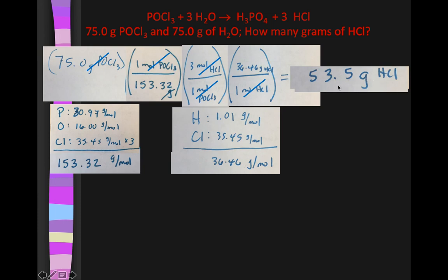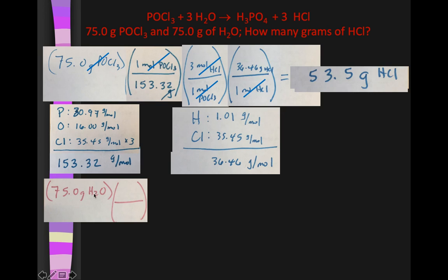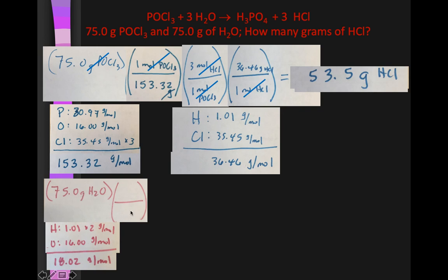But wait, this is just the predicted answer if I run out of POCl3. We don't know if we're running out of POCl3 or if I run out of water. So remember, in an LR problem, we do another stoic problem starting with the other given. 75 grams of water. But it's the same kinds of steps. I'm at water, but I'm trying to get to HCl. I can only switch over chemicals if I'm in moles. So I go from grams of water to moles of water by adding up the molar masses from the periodic table. Hydrogen is 1.01, but I need two of them for H2. And then O is 16. Add all that up: 18.02 grams per mole. Grams has to go on the bottom: 18.02 grams for every one mole of water. Now I'm at moles of water.